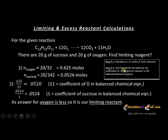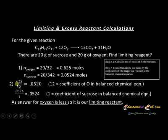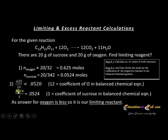Step two: divide the number of moles by the coefficient of the respective reactant in the balanced chemical equation. The equation must be balanced first. For oxygen, divide 0.625 by 12 (the coefficient of O₂) to get 0.0520. For sucrose, divide 0.0584 by 1 (its coefficient) to get 0.0584.